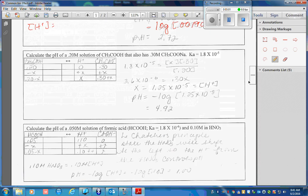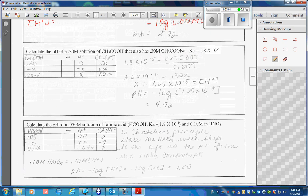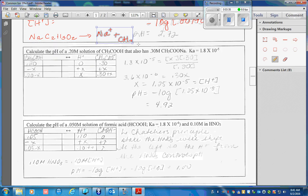Next, I would like to see the effect that common ion has on this solution. Calculate the pH of a 0.2 molar solution of acetic acid that also has 0.30 molar sodium acetate. Sodium acetate is a completely soluble salt and it will decompose into its ions.